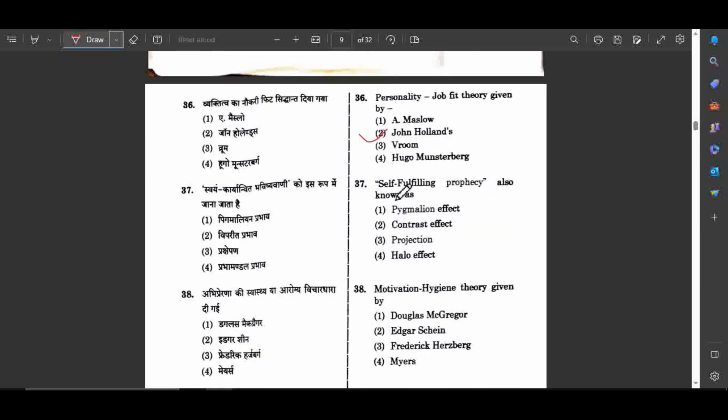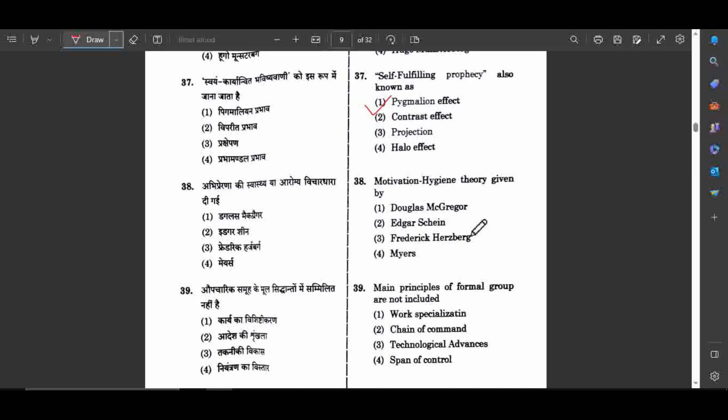Question number 37: Self-fulfilling prophecy means that if we believe in something, it will actually come true. This is also called the Pygmalion effect or interpersonal expectancy theory. Question number 38: Motivation-hygiene theory was given by Frederick Herzberg.